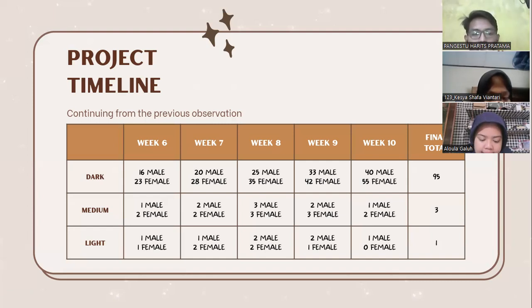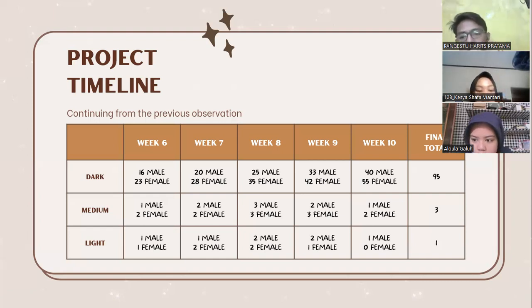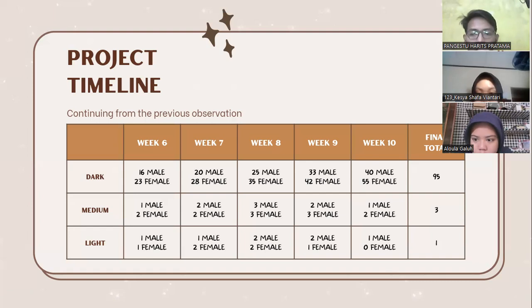The data shows that in week 7 there is 1 male and 2 female; in week 8 there is 1 male and 3 female; in week 9 there is 2 male and 3 female; and in week 10 there is 1 male and 2 female. The final total is 3.